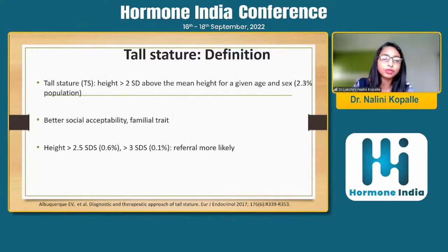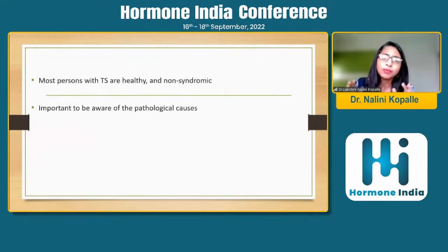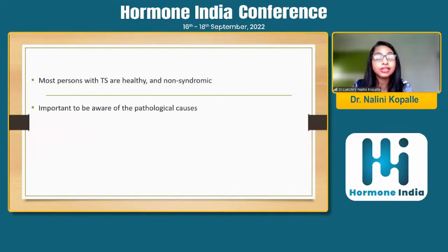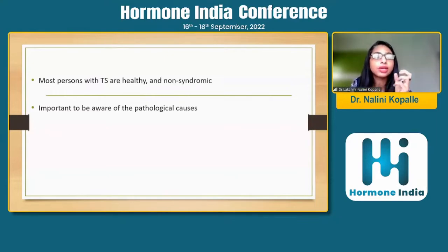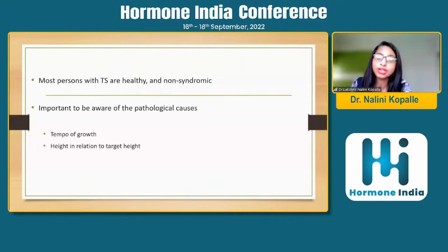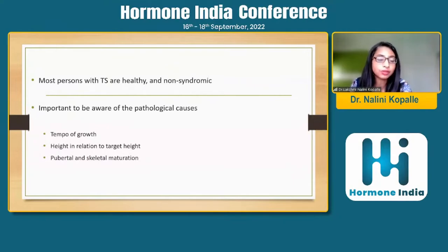Why should we look at tall stature as a problem? Most tall stature people are very healthy and non-syndromic, but it is important and essential to identify the pathological causes. Though the numbers may be small, the impact of systemic conditions which accompany tall stature can jeopardize life and increase morbidity and mortality. We look at certain handles while evaluating tall stature: first, the tempo of growth; second, height in relation to target height; third, pubertal and skeletal maturation — how is puberty and what is bone age; and last but most important, identifying syndromic features.